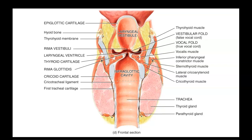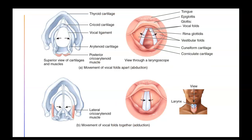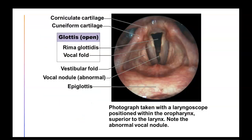A frontal section of the larynx shows what it looks like inside. Looking at the vocal folds, during abduction they open up and form a triangular shape, and during adduction they come together and close. If a laryngoscope were positioned in the oropharynx, this is what the folds would look like — the glottis is the opening surrounded by the vocal folds.